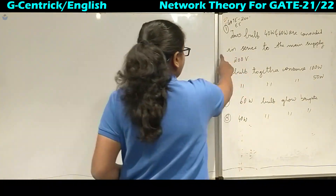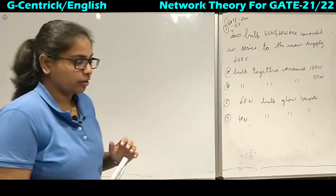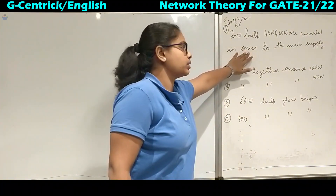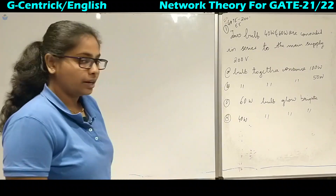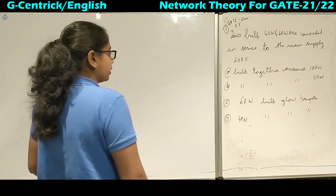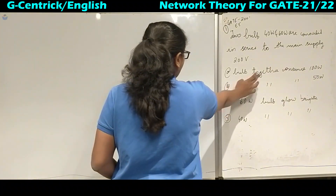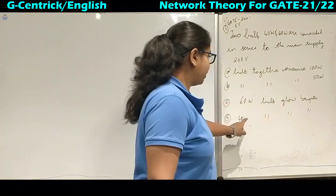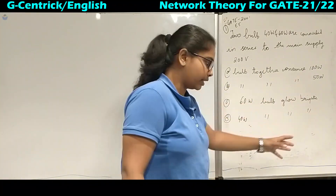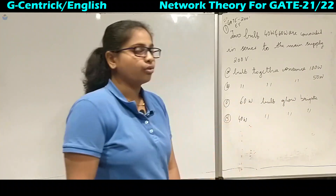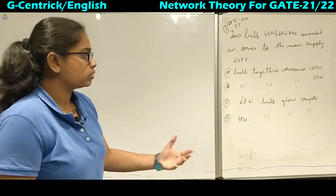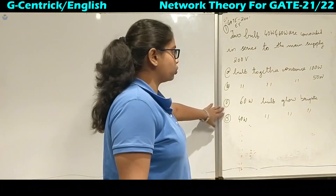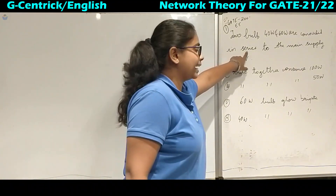We will move on to the first problem: two bulbs given 40 watt and 60 watt are connected in series to the main supply of 200 volts. There are four options: bulbs together consume 100 watt, bulbs together consume 50 watt, the 60 watt bulb glows brighter, or the 40 watt bulb glows brighter. We have to choose one, and the key term here is series.